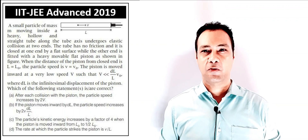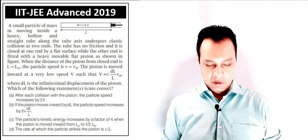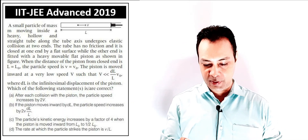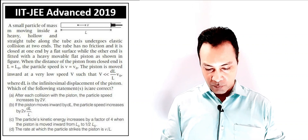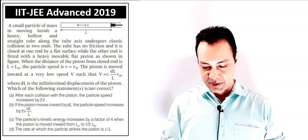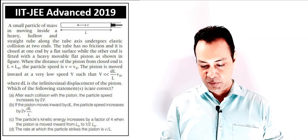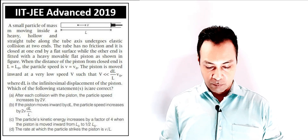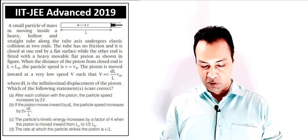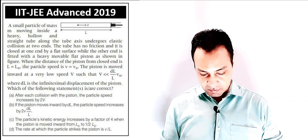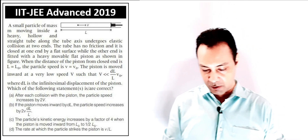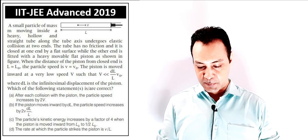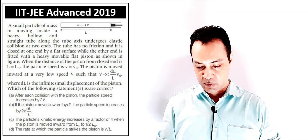Let's look at this recent question from JEE Advanced 2019 - a very good question involving collision. The question states: a small particle of mass m moving inside a heavy hollow straight tube along the tube axis undergoes elastic collision at two ends. The tube has no friction and is closed at one end by a flat surface, while the other end is fitted with a heavy movable flat piston. When the distance of the piston from the closed end is L₀, the particle speed is V₀. The piston is moved inwards at a very low speed V, such that V is much much smaller than (dL/L)·V₀, where dL is the infinitesimal displacement of the piston. We need to determine which of the following statements are correct.